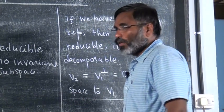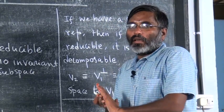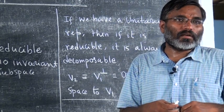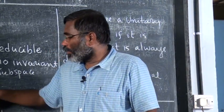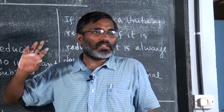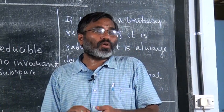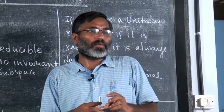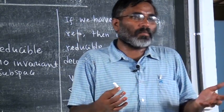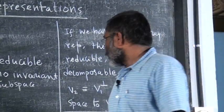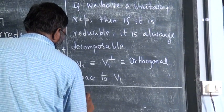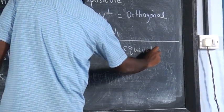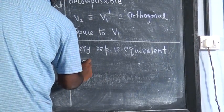Second, you can prove that every representation is equivalent to a unitary representation. These two results together are very useful. Every representation is equivalent to a unitary representation — this is true for finite groups, for discrete groups, and for continuous compact groups. It is not true only if you have non-compact groups, but for a large class of groups that we study, every representation is equivalent to a unitary representation.